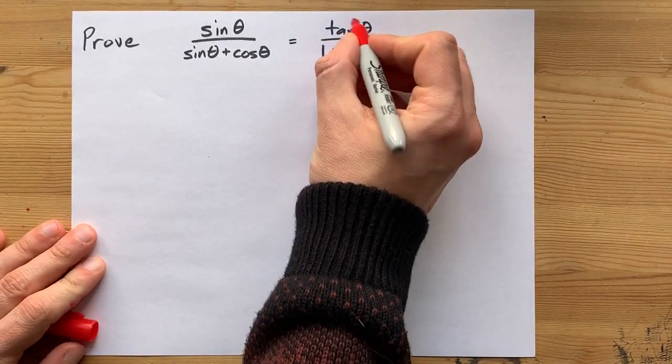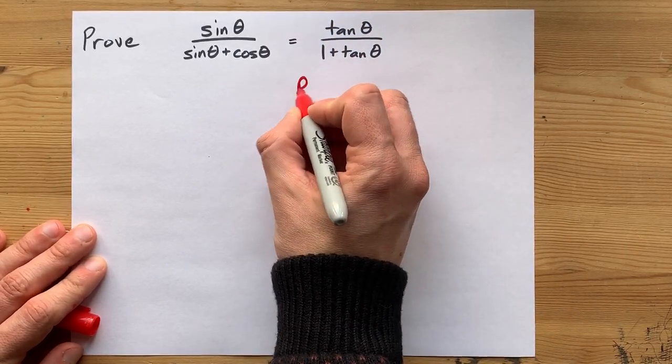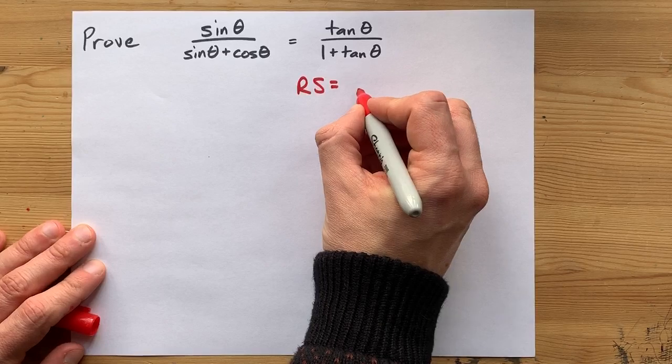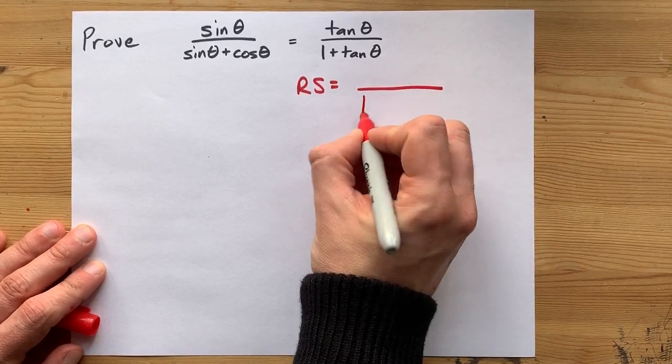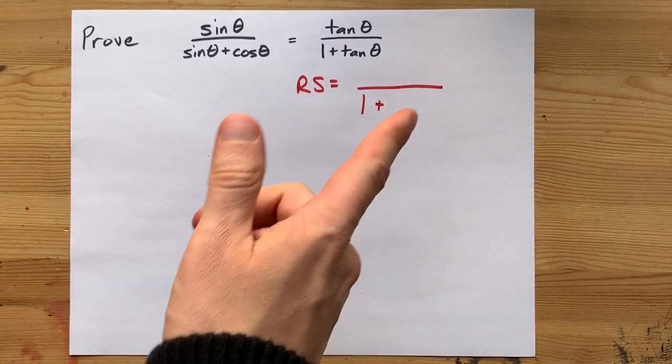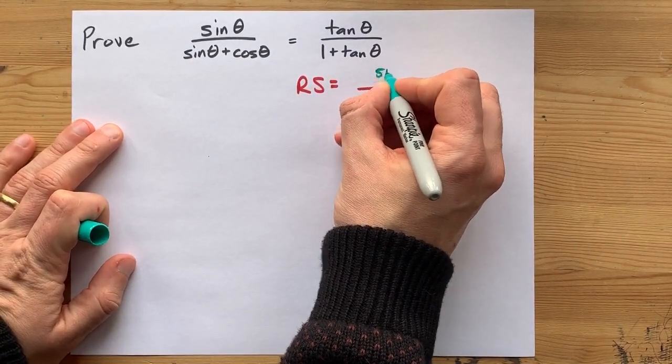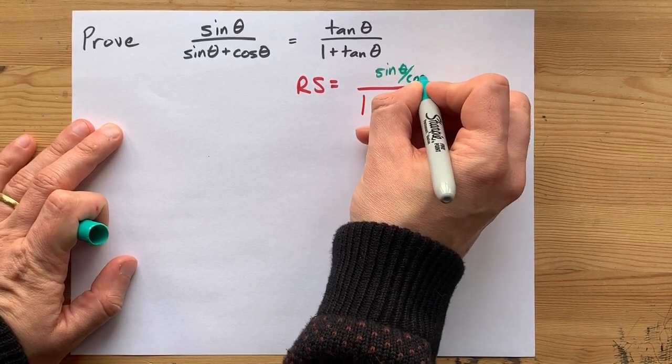Well, I don't like having tan thetas floating around too much inside trig identities, so I'm going to start with the right-hand side, and I'm going to have tan over 1 plus tan. But like I said, I don't like tan. I like replacing it with the quotient identity. Tan is sine over cos.